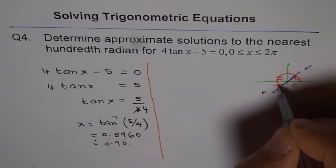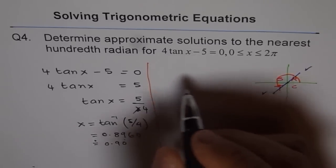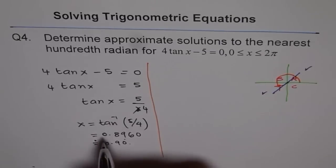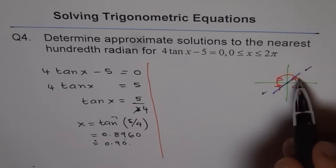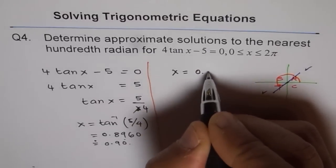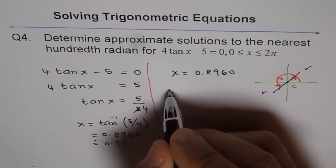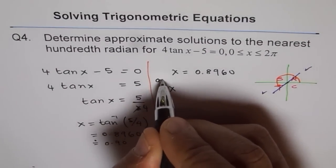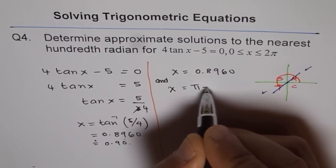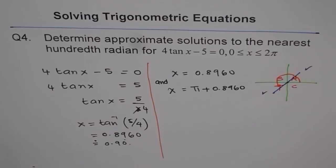What we will do for that is use the related acute angle. Fortunately tan was positive, so that is also part of our solution set. One angle is x equals 0.8960. The other angle should be π plus that much. So the other solution is x equals π plus 0.8960. We have two solutions.